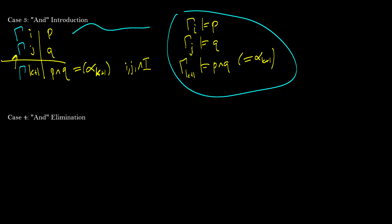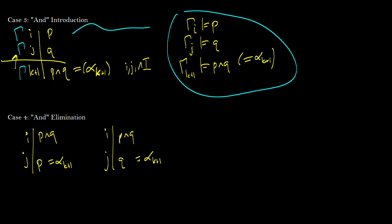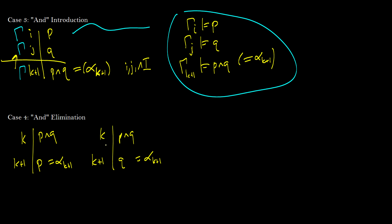Case 4: and-elimination. We have to consider two scenarios. If we have p and q on some line j, we can get p on line k+1, and if we have p and q we can also get q on line k+1. These are our alpha_{k+1}s. It doesn't have to be one step afterward — it can be anywhere, which is why we use the letter j rather than k. These are valid by our rules through and-elimination on line j.